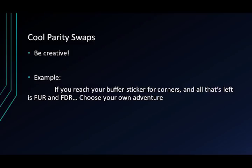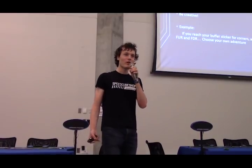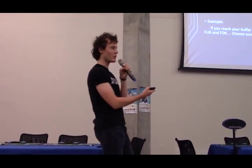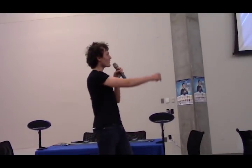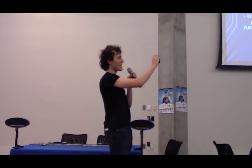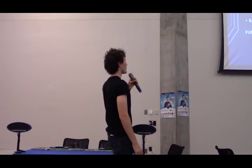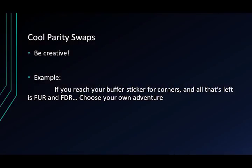Cool buffer swaps — you know how I was talking about swaps before. The most common swap is probably the UL-UB swap for parity, because that's what people are used to from M2. But why do you have to do that? For parity you have to swap two edges, but why not swap the UL and UR edge and set up to a T-perm? This is completely an experimentation thing and it doesn't always work, but it does help. For example, if you hit your buffer for corners but FUR and FDR are still swapped and you're going into edge memo — think about it: you could set up to many different PLLs.